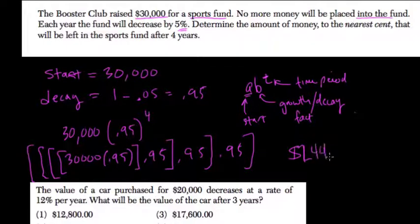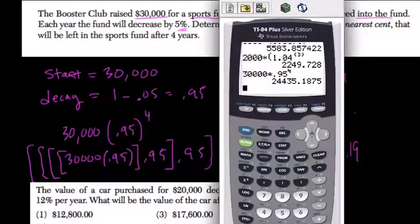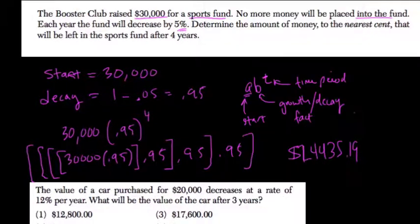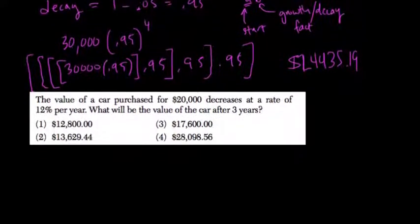So 24,435 and 19 cents. So that's the basic approach, is that you take your starting value and just multiply it by that factor over and over again.